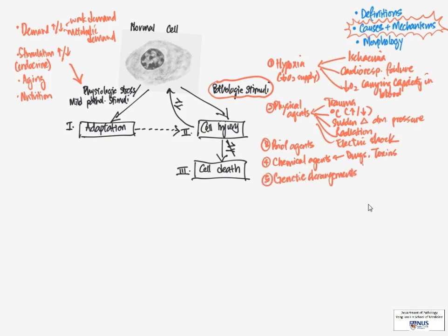Next, certain genetic derangements can also make cells very prone to injury and death. For example, in sickle cell anemia, this actually reduces the lifespan of the red blood cells to much less than normal. Even immunological reactions can also give rise to cell injury. And this is sometimes seen in autoimmune diseases where we have our immune system attacking the body's own antigens and own tissues.